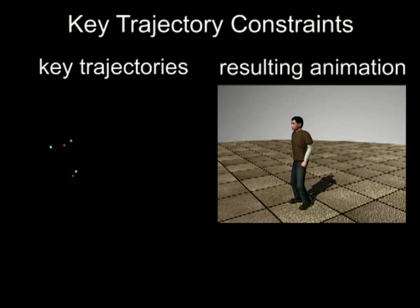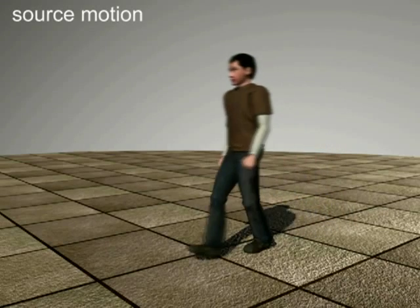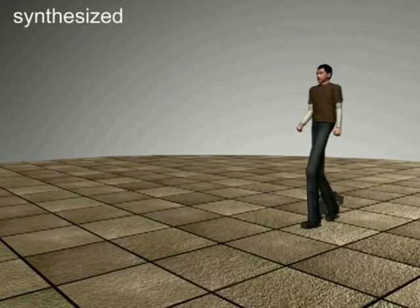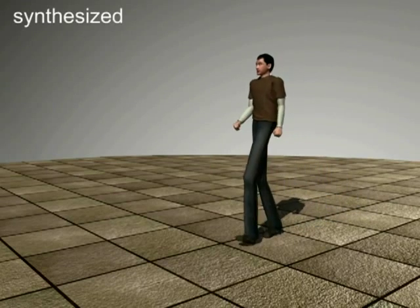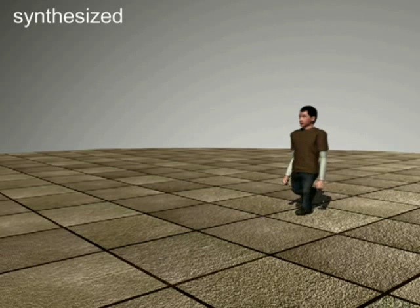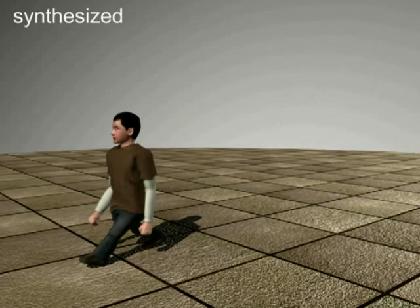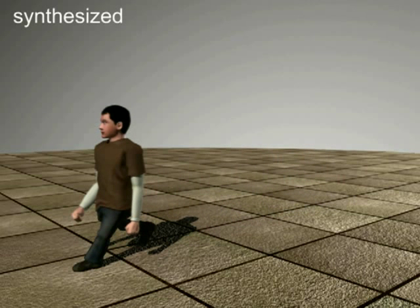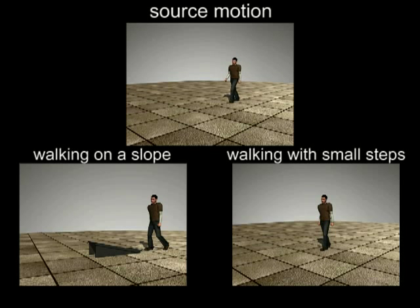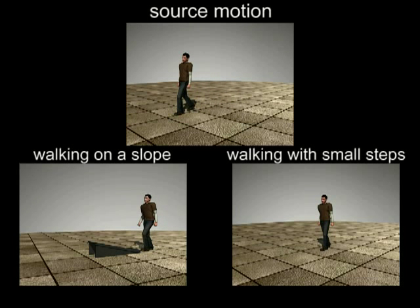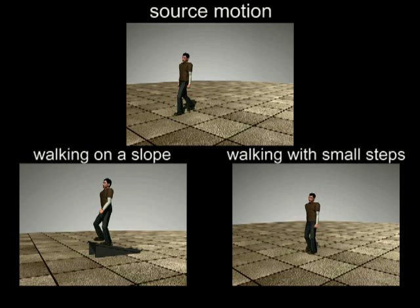Our system can retarget the motion to animate a new character. The source motion and the result. The system can modify a normal walking sequence to create a new walking motion: the source motion, walking on a slope, and walking with a small step.